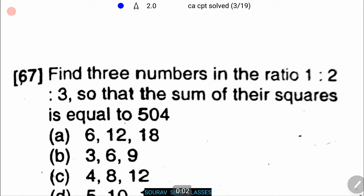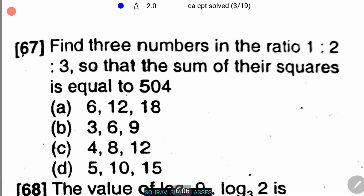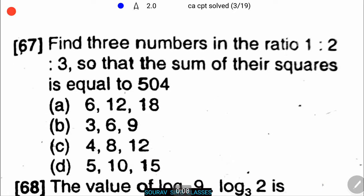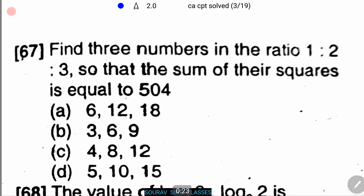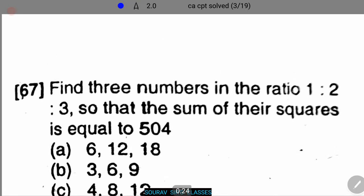Welcome to Psych Classes. Here's the first problem: find three numbers in the ratio 1:2:3 such that the sum of their squares is equal to 504. The four options are: (A) 6, 12, 18; (B) 3, 6, 9; (C) 4, 8, 12; and (D) 5, 10, 15.